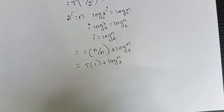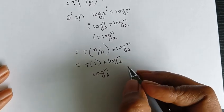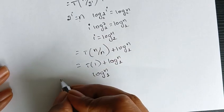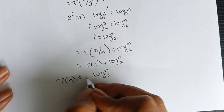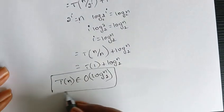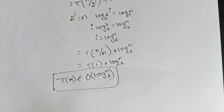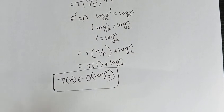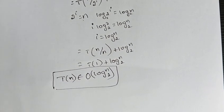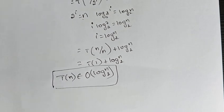So the answer is log₂(n). This is the worst case efficiency of binary search. We can write it as T(n) ∈ O(log₂n). This is the worst case efficiency of binary search algorithm. Thank you.